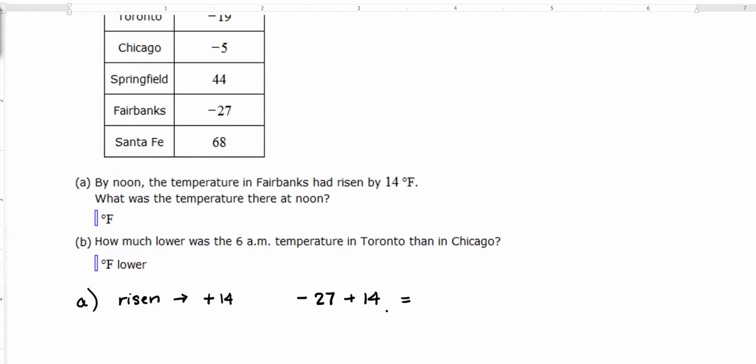And so here we have addition of a negative number and a positive number. So remember, that's really just the sign of the larger number is going to win, so we know it's going to be negative because 27 is bigger than 14. And we're going to take 27 minus 14, and the number is 13. So it's going to be negative 13 degrees Fahrenheit.